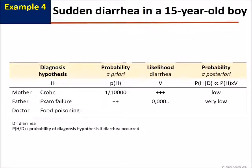Second hypothesis, the failure of the exam. The frequency of exam failures in this teenager who makes the despair of his father is high. But the probability of diarrhea following a failed exam, while not impossible, is highly doubtful. Finally, the probability of this hypothesis is negligible.